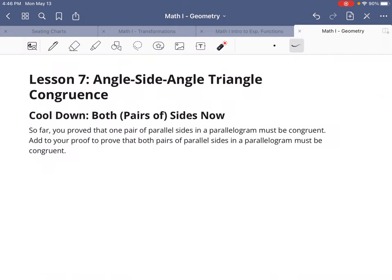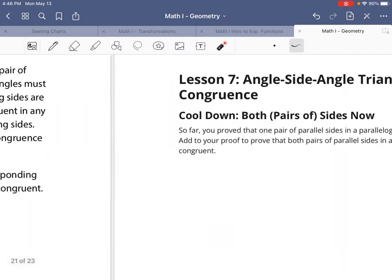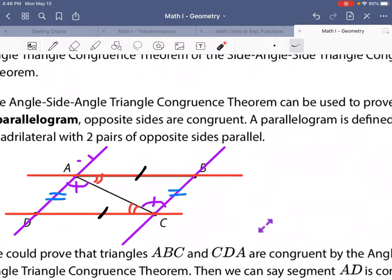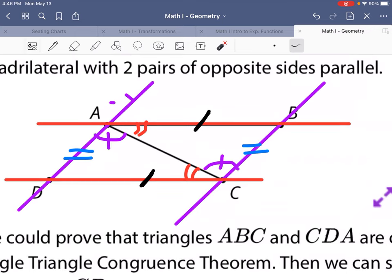So far, you proved that one pair of parallel sides in a parallelogram must be congruent. Add to your proof to prove that both pairs of parallel sides in a parallelogram must be congruent. Hmm. Wait a minute. What did we just do here?